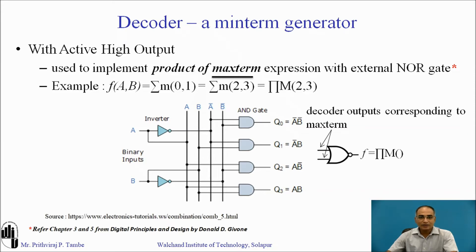This decoder with active high output can also be used to implement product of maxterms expressions, but with an external NOR gate. Here one example is shown: f(A,B) equals sum of minterms 0 and 1, which can be rewritten as product of maxterms 2 and 3. You can also rewrite this as sum of minterms 2 and 3 and its complement. With the external NOR gate you connect decoder outputs corresponding to the maxterms as inputs to the NOR gate, and you achieve the implementation of the product of maxterms.